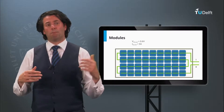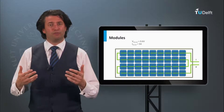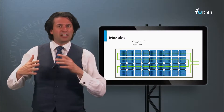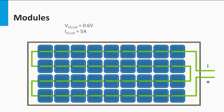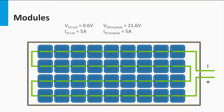This means that if we consider a module, you can partly tune the voltage and the current output by the arrangement of the connections of the solar cells. A typical solar panel contains 36 solar cells connected in series. If a single junction solar cell has a short circuit current of 5 A and an open circuit voltage of 0.6 V, the current output of the module is equal to that of a single solar cell, which is 5 A. The open circuit voltage would be 36 times that of a single junction cell, which equals 21.6 V.